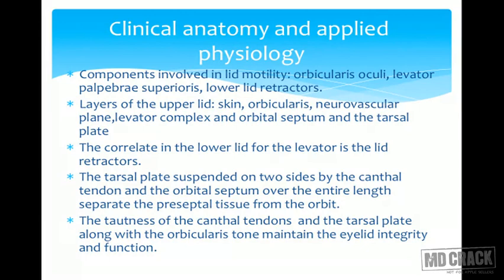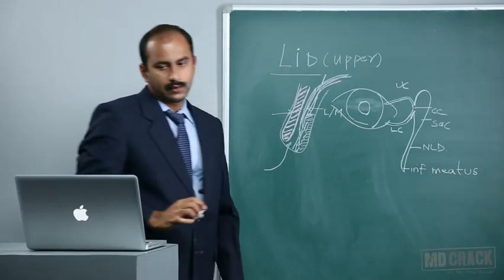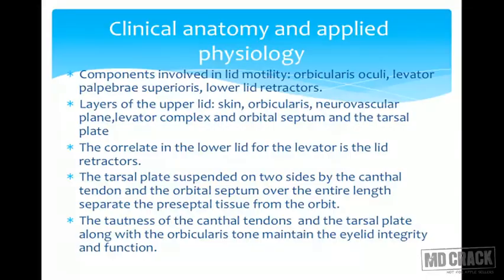The first is the orbicularis oculi and the second is the levator and Müller's muscle complex. The levator and Müller's muscle complex is involved in opening of the eye, whereas the orbicularis is involved in eye closure. The lower lid does not have a corresponding muscle like the levator and Müller's; instead it has lid retractors which serve to stabilize the lower lid.